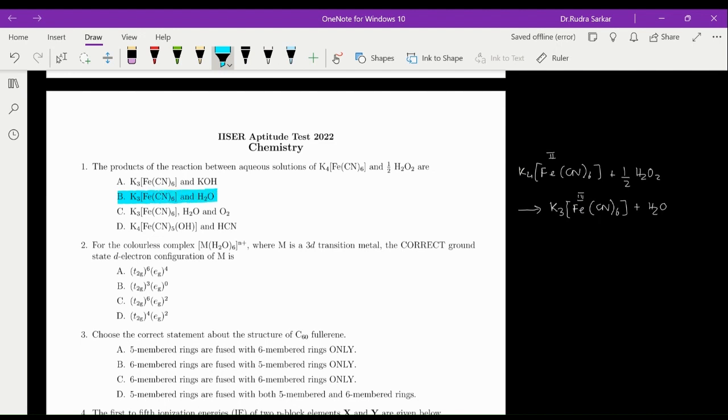Next question: for the colorless complex M(H2O)6 n+, where M is a 3D transition metal, the correct ground state d electron configuration of M is. So colorless transition metal complex with water being a ligand will almost be those in which the d electron configuration is D10 or D0.